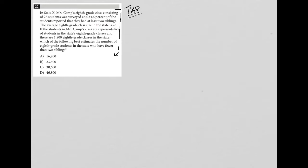This question says in state X, Mr. Camp's eighth grade class consisting of 26 students was surveyed and 34.6% of the students reported that they had at least two siblings. So out of 26 students that were surveyed, we had 34.6% which says they had greater than or equal to two siblings. So there's my translation.